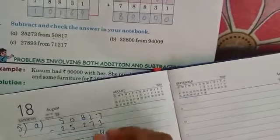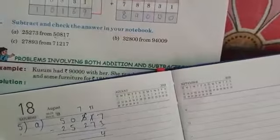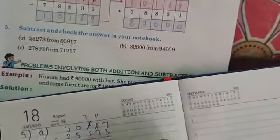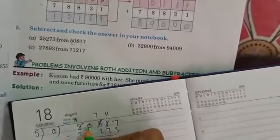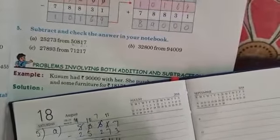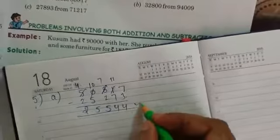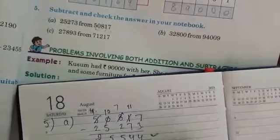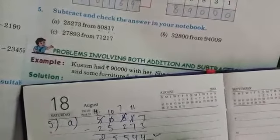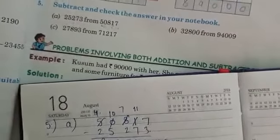7 minus 3 is 4, 11 minus 7 is 4, 7 minus 2 is 5, 10 minus 5 is 5, 4 minus 2 is 2. Now, this is your answer. In the similar way, you have to do the rest of two sums. Okay, students?